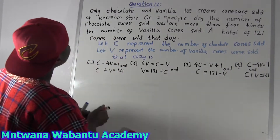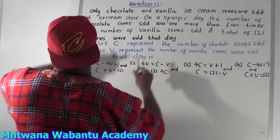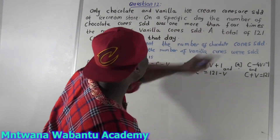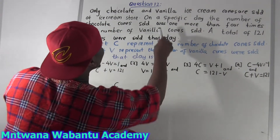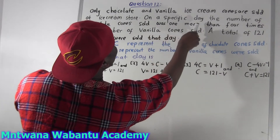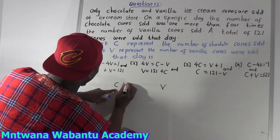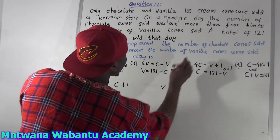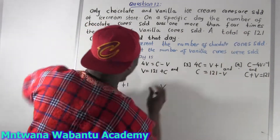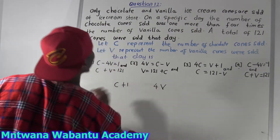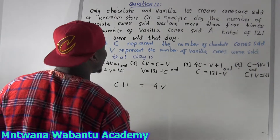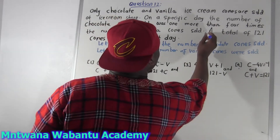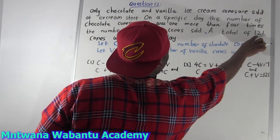On that specific day, the number of chocolate cones was one more than four times the number of vanilla cones. So chocolate equals one more than four times vanilla: C = 4V + 1. That gives us our first equation.